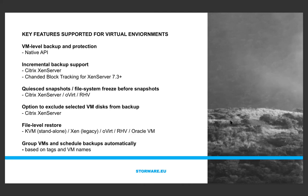We have the option to do quiesce snapshots on Citrix or freeze file systems on RHV. This is especially important if you have applications that should be aware of the snapshot being done. In Citrix, quiesce snapshots use VSS behind the scenes, so if you have a virtual machine configured with Citrix tools, you're able to snapshot the VM in a quiesce way. Otherwise, we provide regular crash-consistent snapshots.